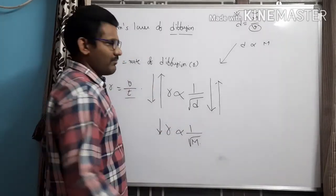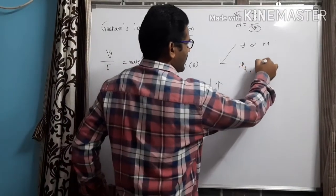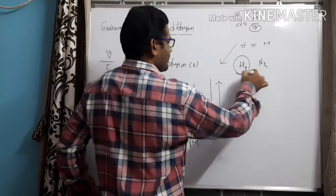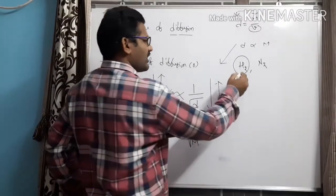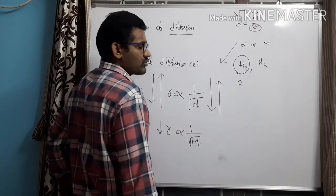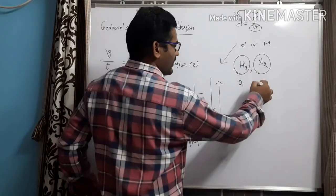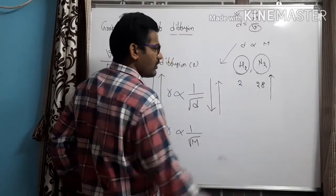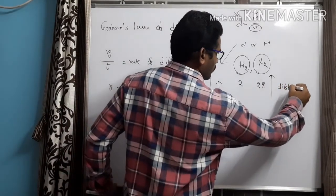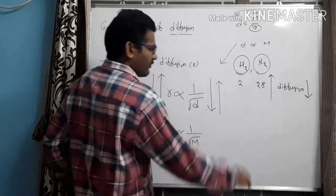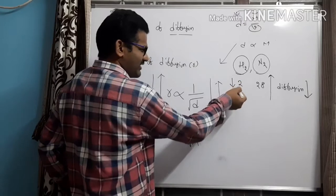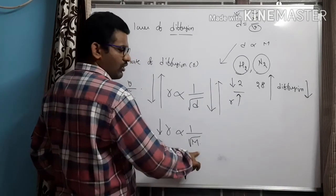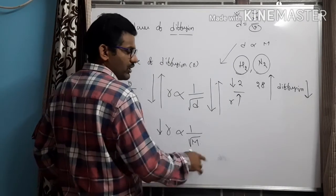For example, if we have two gases — hydrogen and nitrogen — which will have the more rate of diffusion? Automatically, hydrogen. Why? Hydrogen's molecular weight is only 2, whereas nitrogen's molecular weight is 28. Whenever molecular mass is more, diffusion is less. For hydrogen, molecular mass is less, so its rate of diffusion will be more. Rate of diffusion and molecular mass are inversely proportional to each other.